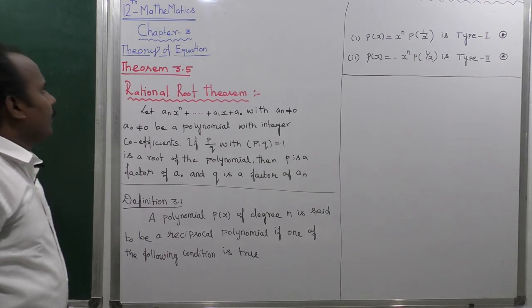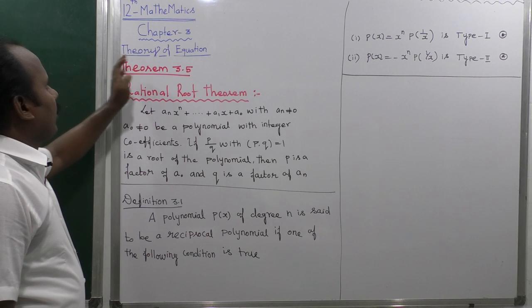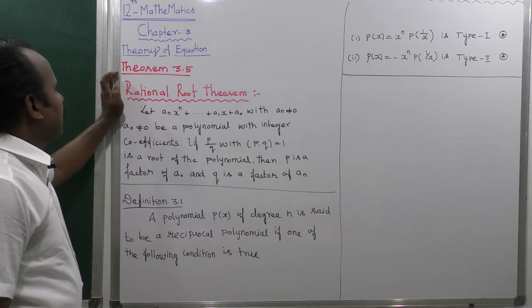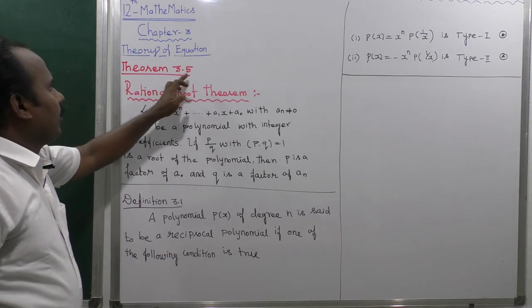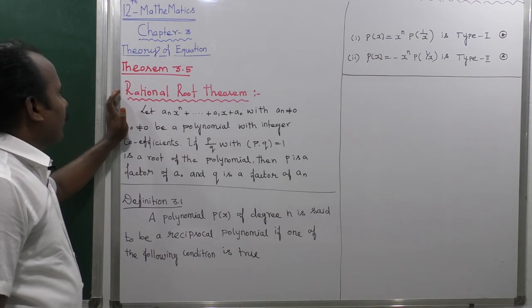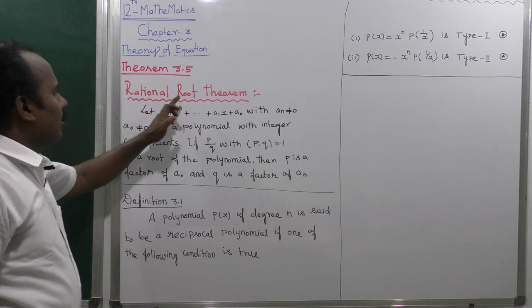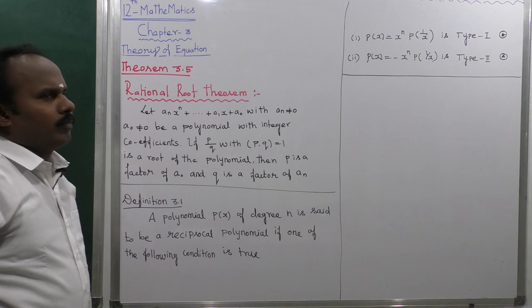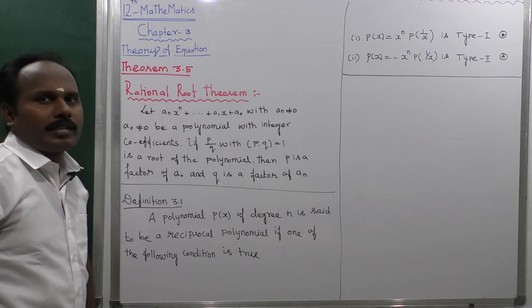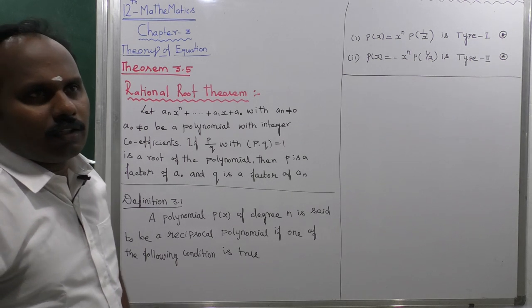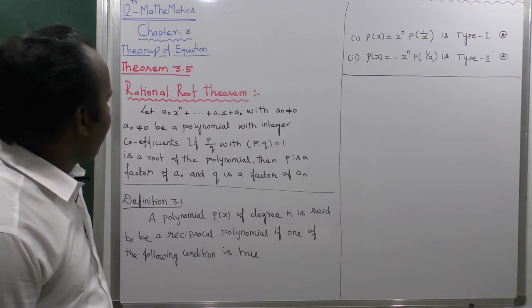Chapter 3, Theory of Equations, Theorem 3.5: Rational Root Theorem.